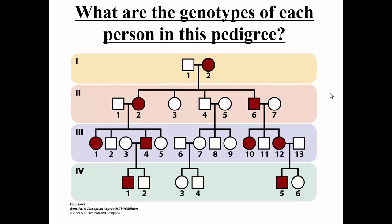If we look at this pedigree and ask what are the genotypes — using letter A again — any person not shaded in, given autosomal dominant, must be little-a, little-a because they're not affected. For an affected individual, there's more interpretation: they could be big-A, big-A or big-A, little-a. In this case, this mother must be big-A, little-a — because she has mutant children, so she passes on the big-A, but she also has children that are not affected, so she must be capable of passing on a little-a.